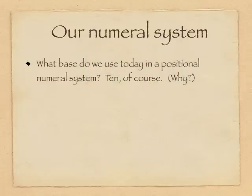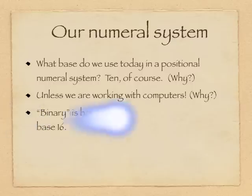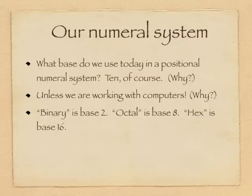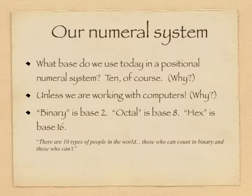Our numeral system is positional, base ten. We got that from the Hindu-Arabic societies, unless you work with a computer. And if you work with a computer, then you're going to use something like base two or some power of two. Octal is base eight, hex is base sixteen. In general, if you're working with a computer, you're using base two. So one zero stands for the number two.